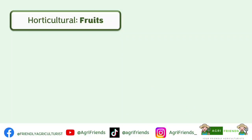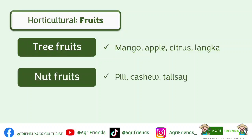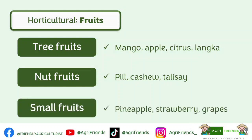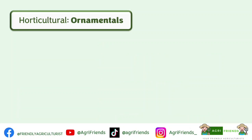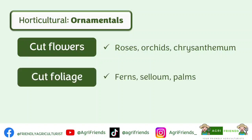Under fruits, we have tree fruits such as mango, apple, citrus, and langka. Nut fruits include pili, cashew, and talisay. Small fruits include pineapple, strawberry, and grapes. For ornamentals, we have cut flowers — grown for their flowers — such as roses, orchids, and chrysanthemum. Cut foliage plants are grown for their leaves that provide background in floral arrangement, such as ferns, siloom, and palms.